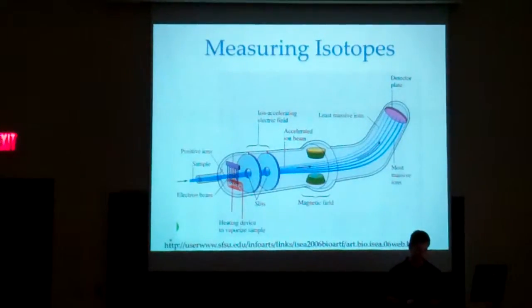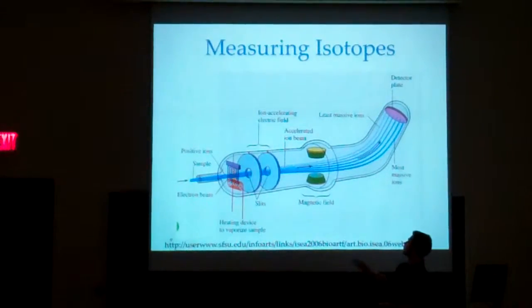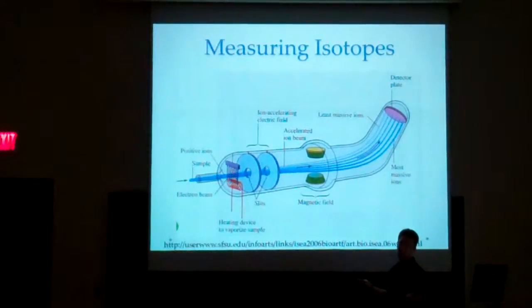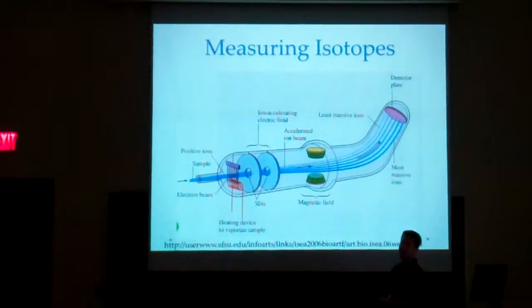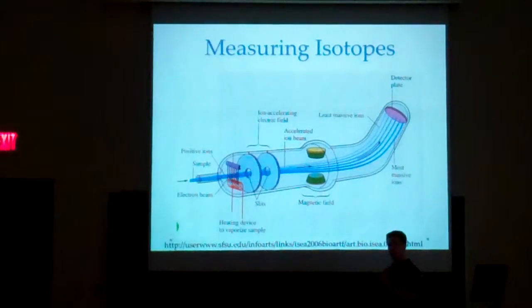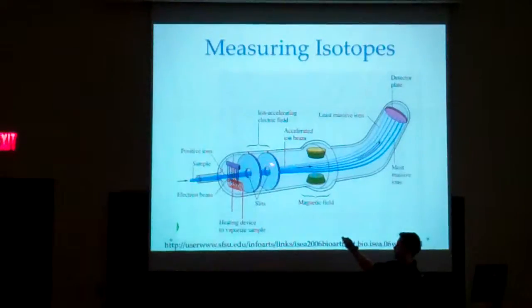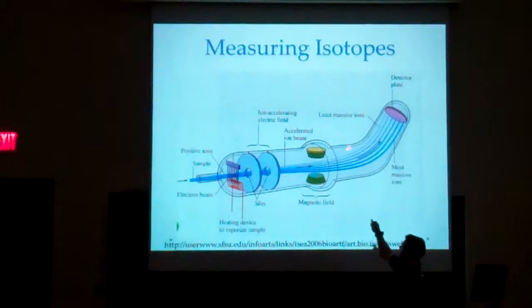The mass spectrometer is the device we use to measure fractionation. At the front end, you inject your sample — say carbon. Your carbon sample goes in, and right here a coiled metal heating device fires electrons off. A bar above has a positive charge that attracts these electrons. When your carbon sample comes in, this electron beam hits the electrons in your sample, knocking them off and giving your sample a positive charge.